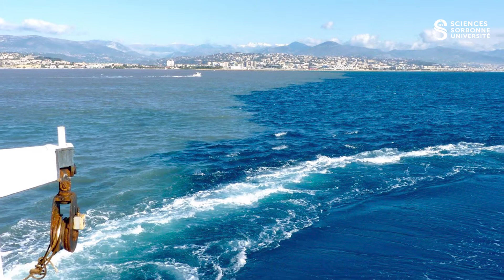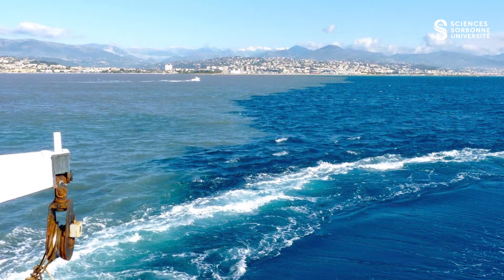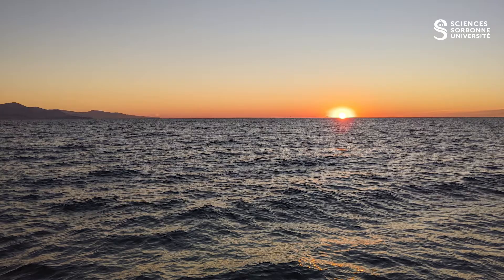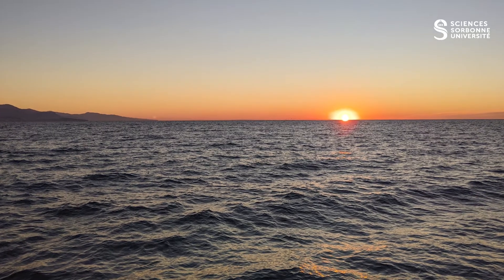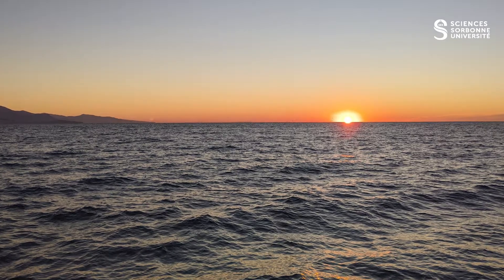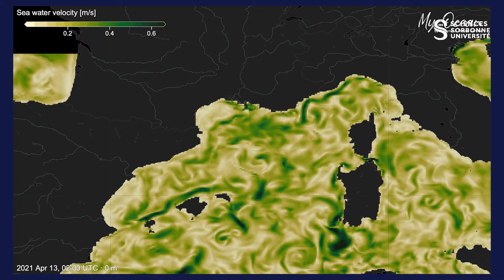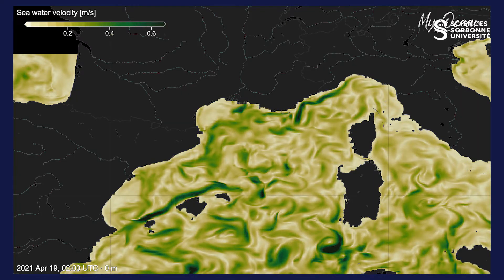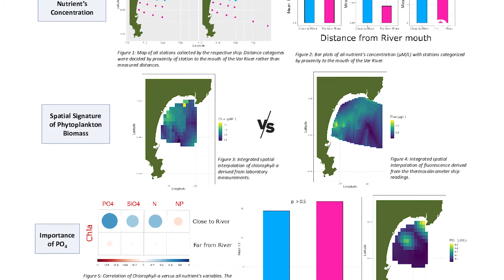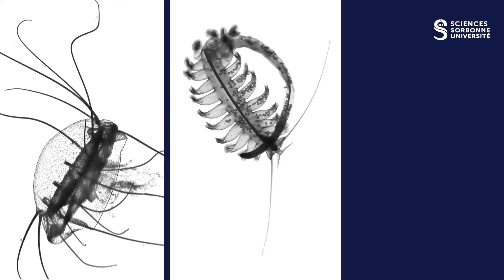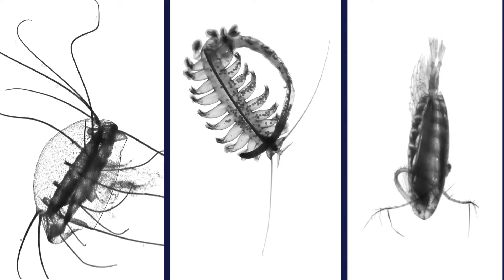You work on an oceanographic question, either in the coastal domain where you study the influence of a river plume, or in the offshore domain where you target the signature of a mesoscale front. You approach it from different angles: physics, chemistry, primary production, zooplankton ecology and so on.